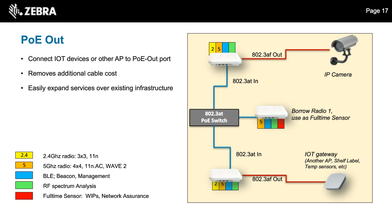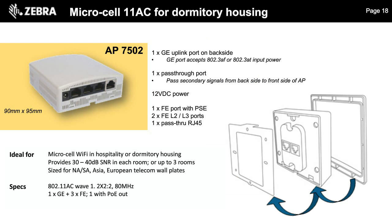We'll also see IoT in education. And for dormitory housing, there's a micro-cell AP that's 3.5 inches square — tiny, snaps onto the wall, with multiple Layer 3 Ethernet ports that can route or bridge packets. It's a dual-radio 11AC device with lots of capabilities for higher education dorm environments.